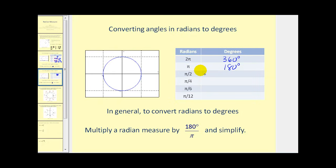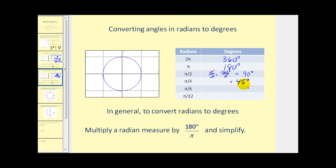To convert pi over two radians to degrees, we multiply by 180 degrees divided by pi and simplify. The pi's cancel out, and this simplifies to 90 degrees. Pi over four is half of pi over two, so half of 90 degrees would be 45 degrees. This is important because any angle that is a multiple of 45 degrees will correspond to a multiple of pi over four radians.